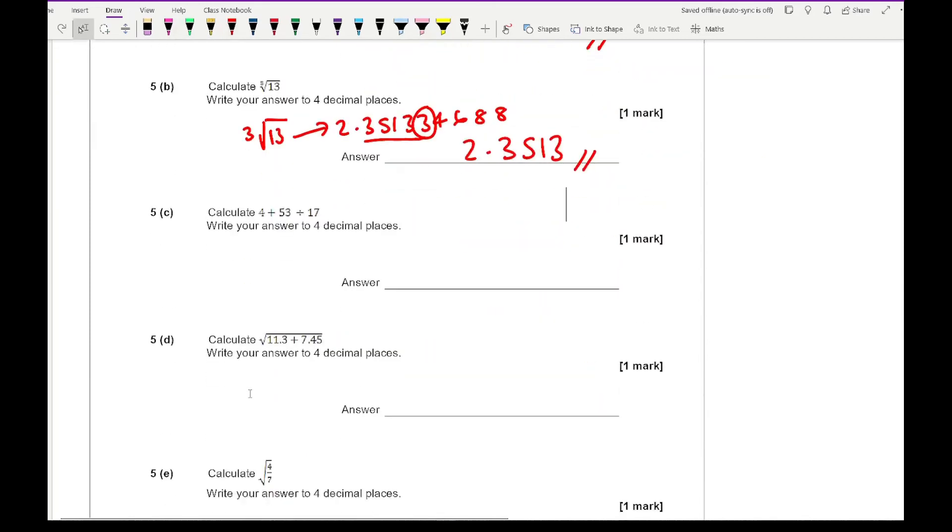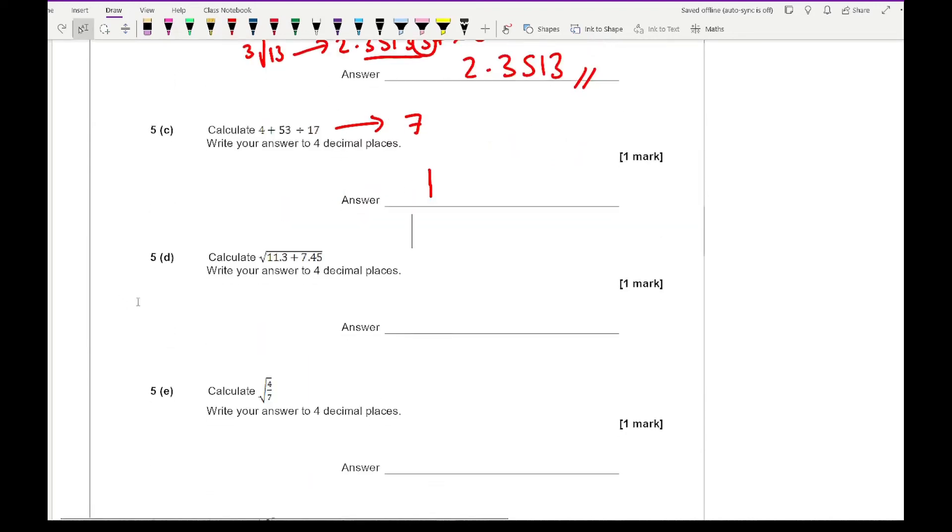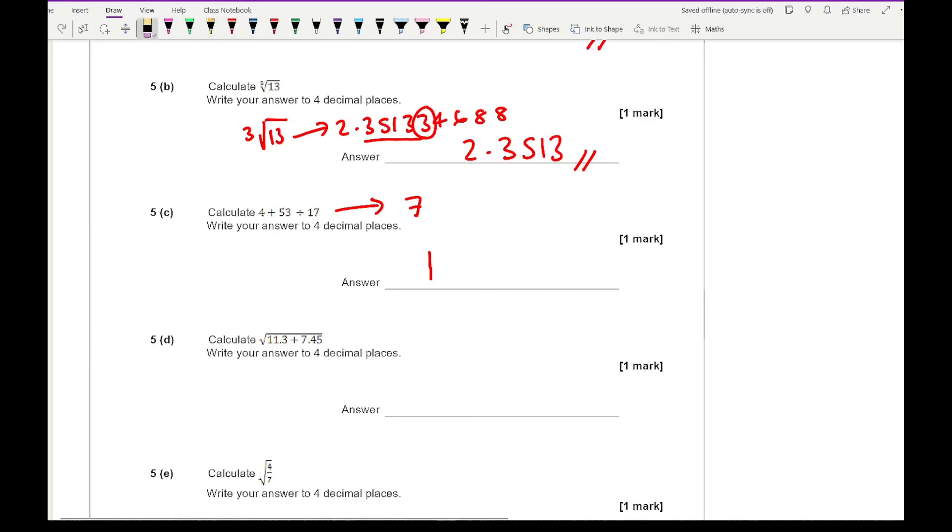For 5C, I want to enter this all on the calculator. If I look at it at base value, it should give me an answer around 7. The calculator gives 7.117647059. Rounding this to 4 decimal places gives 7.1176.